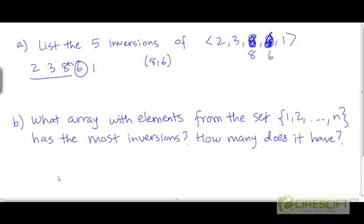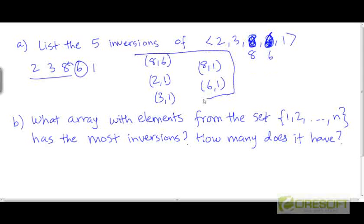When we bring in the fifth element, 1, it has a value less than all four preceding elements and appears to the right of all of them. So there are 4 more inversions involving 1: (2,1), (3,1), (8,1), and (6,1). Together with (8,6), these are the five inversions of the array. For each inversion, the element on the left has a value larger than the element on the right.